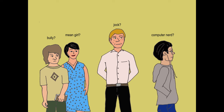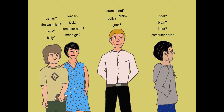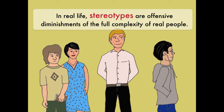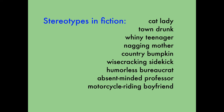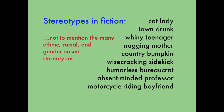One quick comment on stereotypes. If you're a student in middle or high school, you already know about stereotypes: the brain, the jock, the computer nerd, the dumb blonde, the immigrant, the loner, the bully, the mean girl, the weird kid. These are offensive diminishments of the full complexity of real people. Even a positive stereotype is still obnoxious and insulting — an excuse not to really see somebody as who they really are as individuals. Avoid stereotypes at all costs. But in writing, many writers find it convenient to use stereotypes to describe flat minor characters — the town drunk, the motorcycle-riding boyfriend, the humorless bureaucrat, the nagging mother — sometimes called stock characters. The best writers don't resort to this shortcut, or if they do, they start with the stereotype but fill it in with more detail and dimension, like the bully in Bridge to Terabithia.